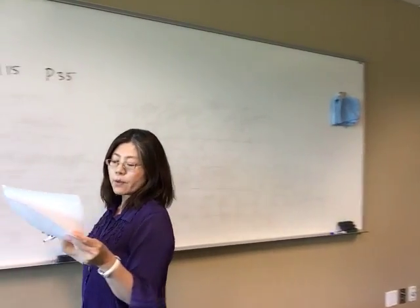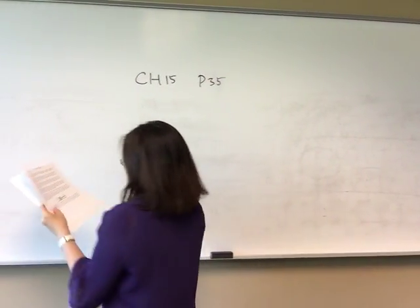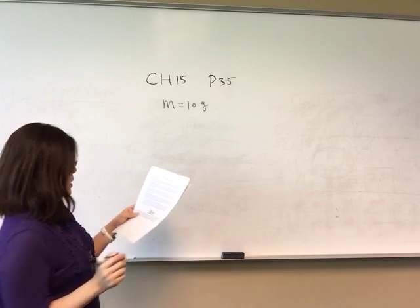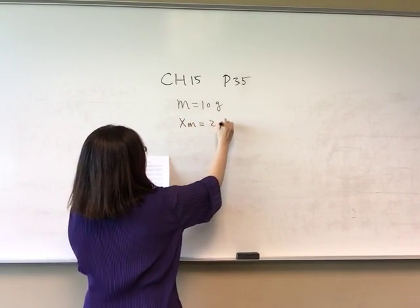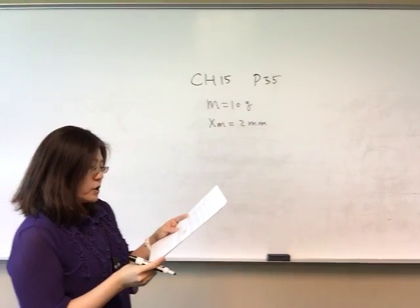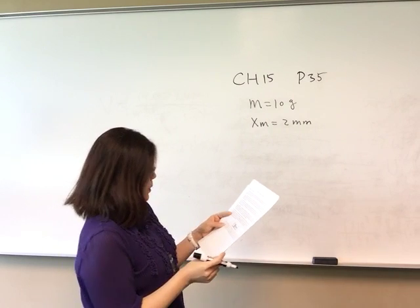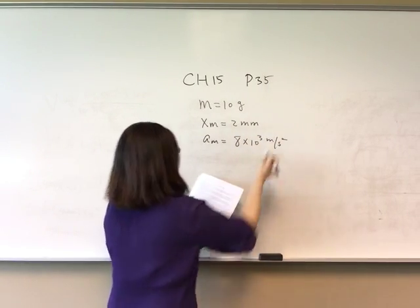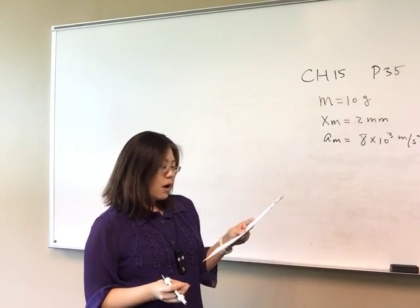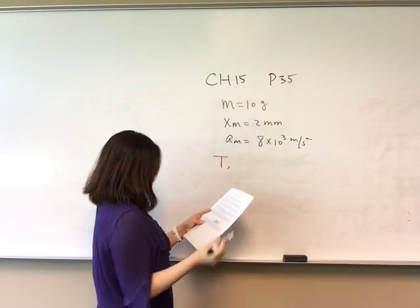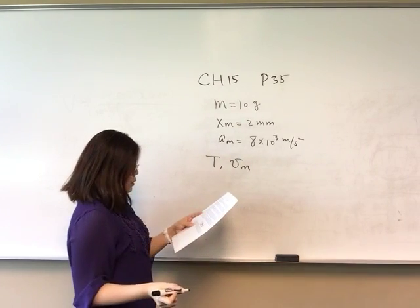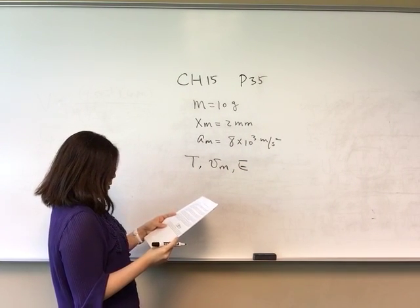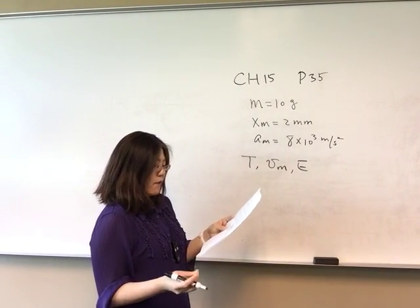Problem 35: A 10-gram particle undergoes simple harmonic motion with an amplitude of 2 millimeters, so xm equals 2 mm. The maximum acceleration is 8 times 10 to the third meters per second squared. We are asked to find the period, maximum speed, total mechanical energy, and the force on the particle at maximum and half-maximum displacement.